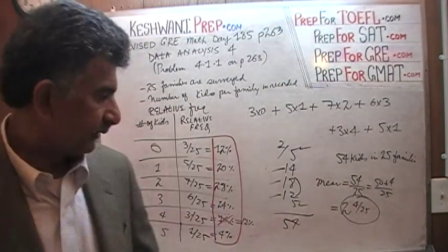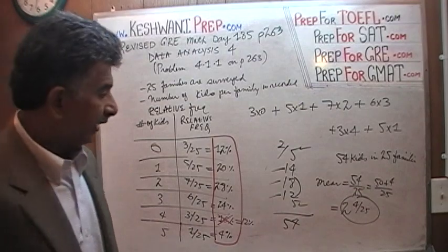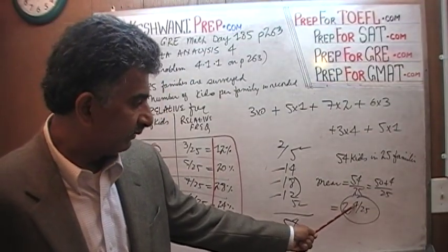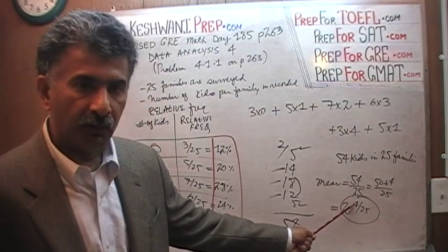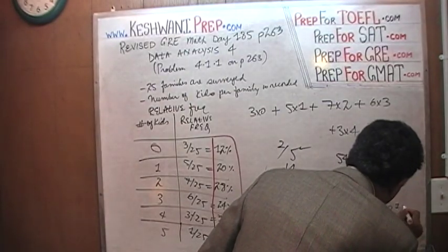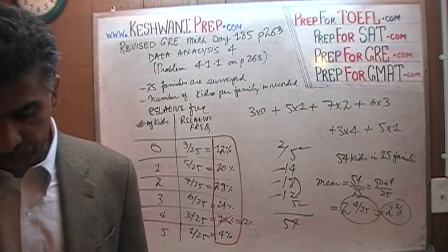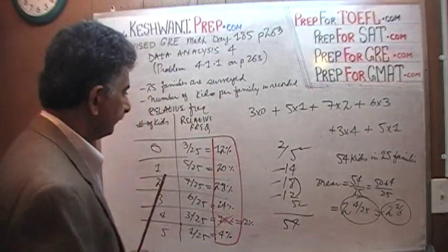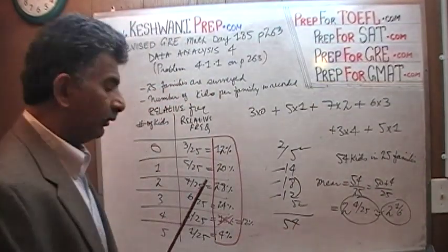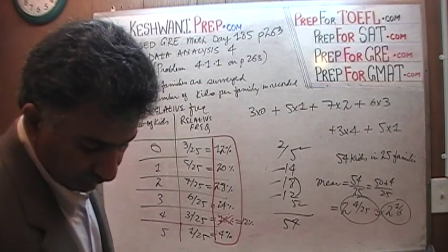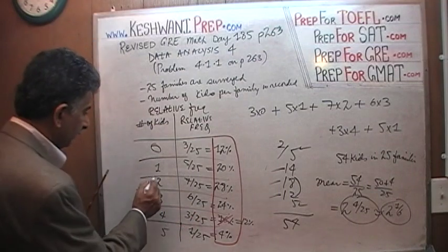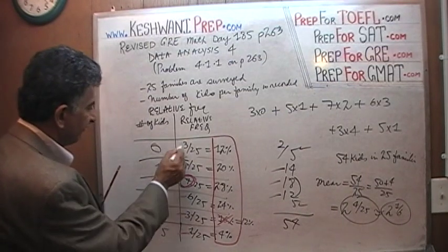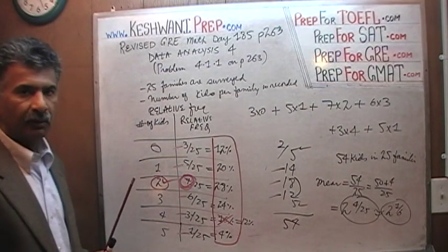So the mean is 2 and 4/25ths — approximately 2 and 1/6 children per family. Now the mode is very simple: it is the most frequently appearing number, meaning the greatest number of families with a given number of children. We have 3 families, 5 families, 7 families, 6 families, 3 families, 1 family. The most frequently appearing number is 2, so the mode is 2.